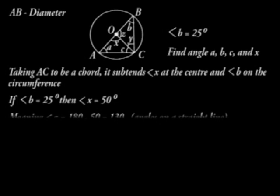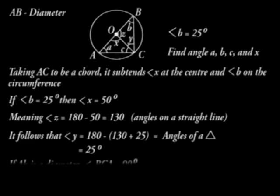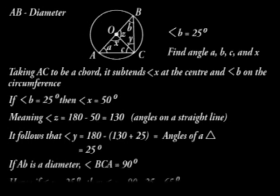Meaning, angle Z is equal to 180 minus 50, which is equal to 130. That is, angles on a straight line. It follows that angle Y is equal to 180 minus 130 plus 25, being angles of a triangle, which is 25 degrees. If AB is a diameter, then angle BCA is 90 degrees. Hence, if Y is 25 degrees, then angle C is 90 minus 25, which is 65.